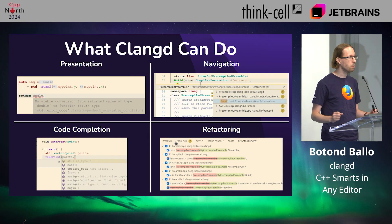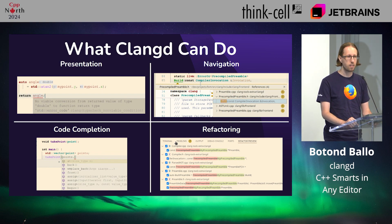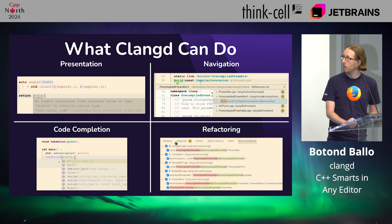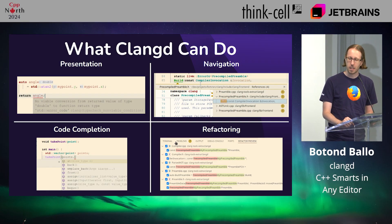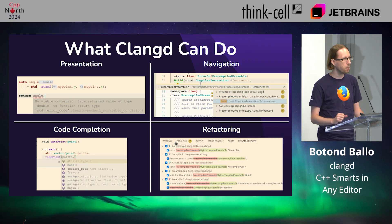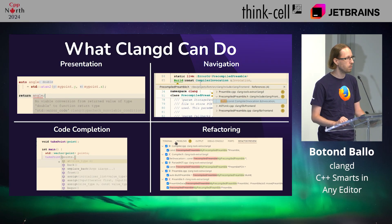So what does Clang D do for you as a programmer? I'll give a few representative examples of its features. It has presentation features — the first statement in that screenshot shows inlay hints. Clang D annotates your code inline with interesting information, for example parameter names next to your function arguments. That's basically your editor giving you that named arguments feature that the C++ language probably never will.